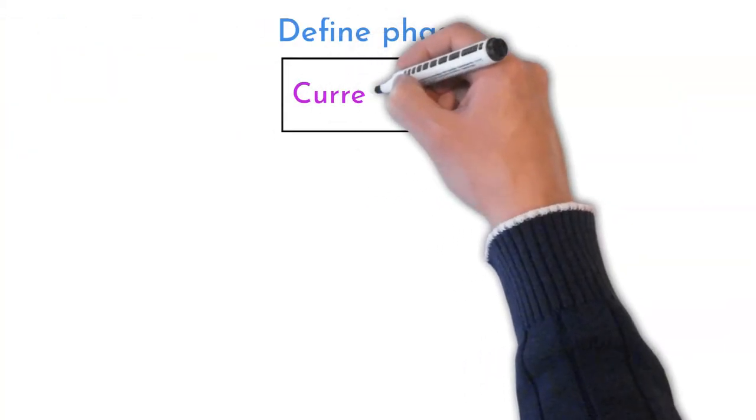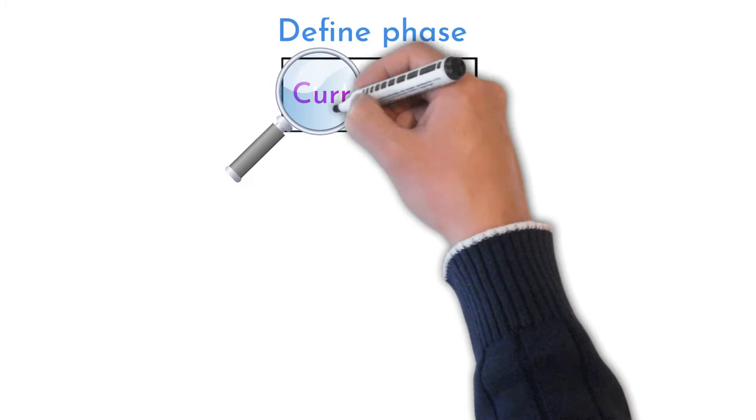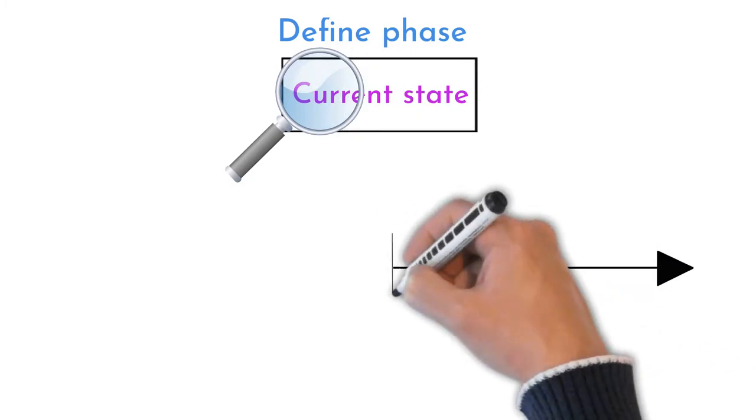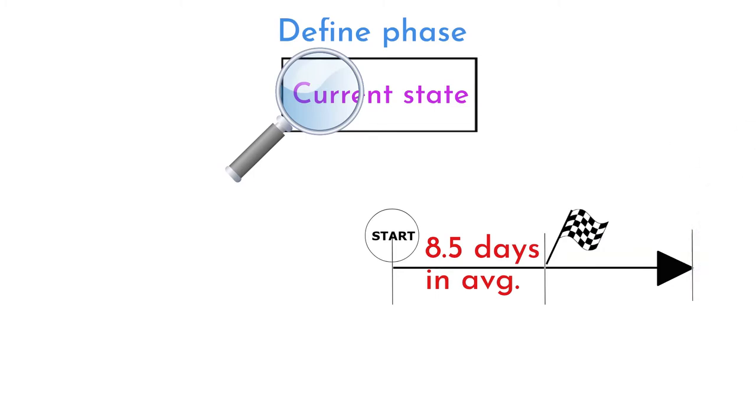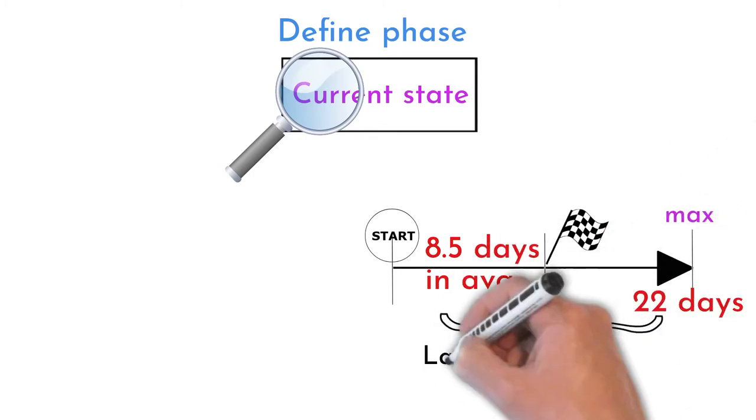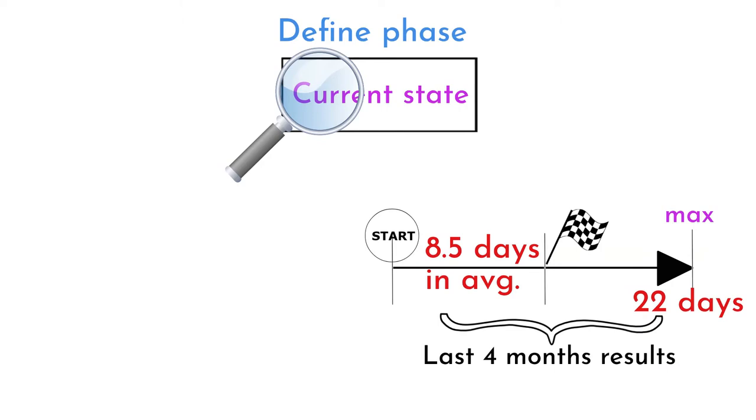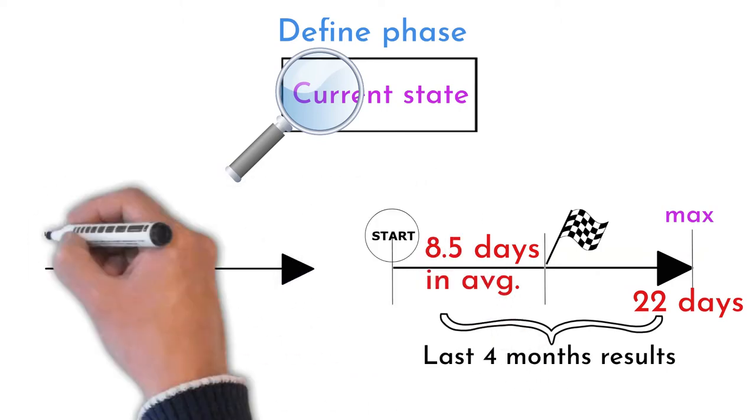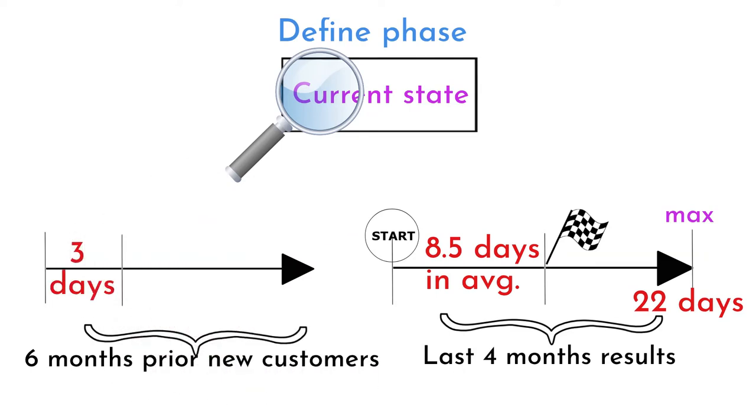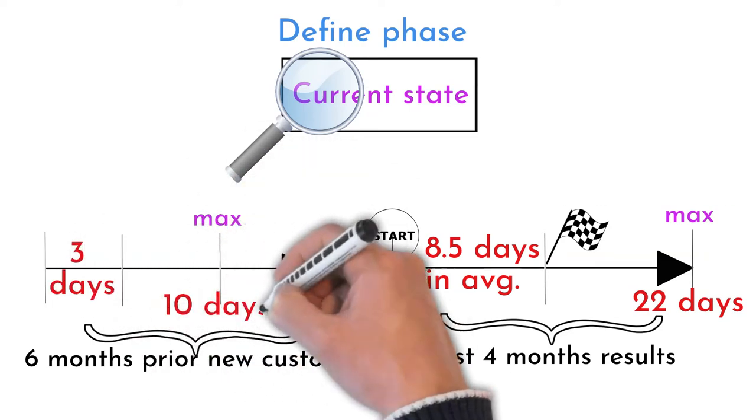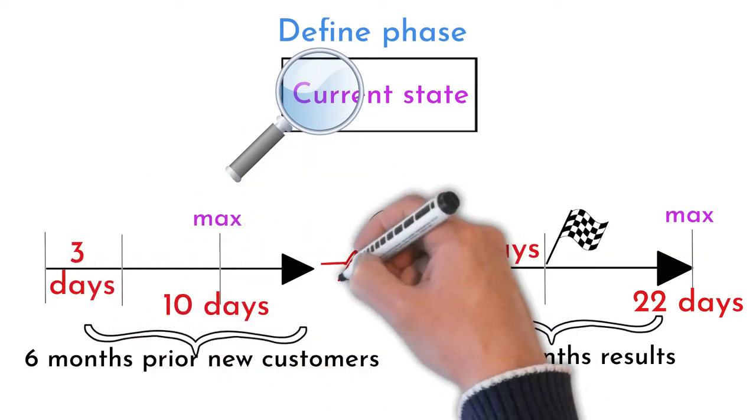First step was to understand what is the current state reality. Time from request beginning to its successful termination is 8.5 working days on average. Maximum time for resolving problems is 22 days. These data are acquired from the last four months of operations with new customers. Resolution time for six months prior to new customers was three days with maximum resolution of 10 days. Room for improvement is obvious.